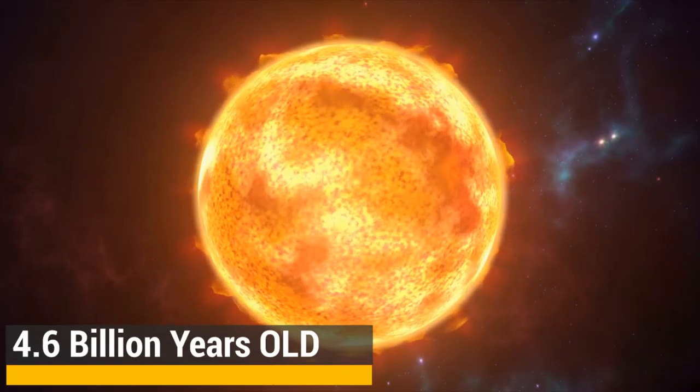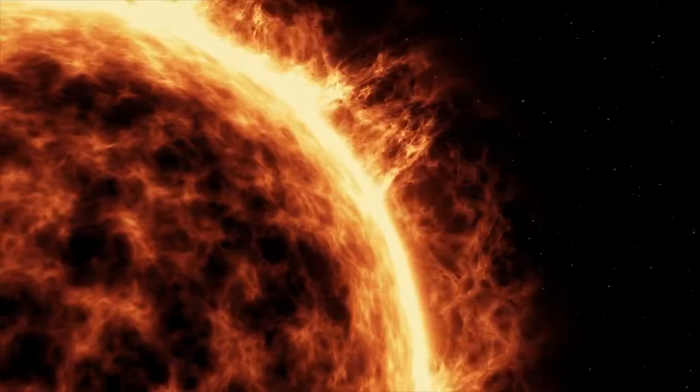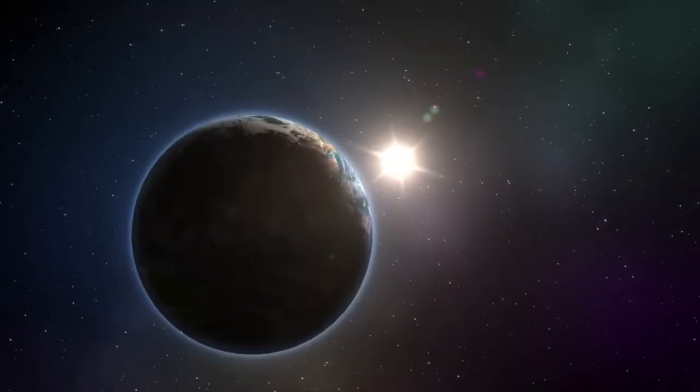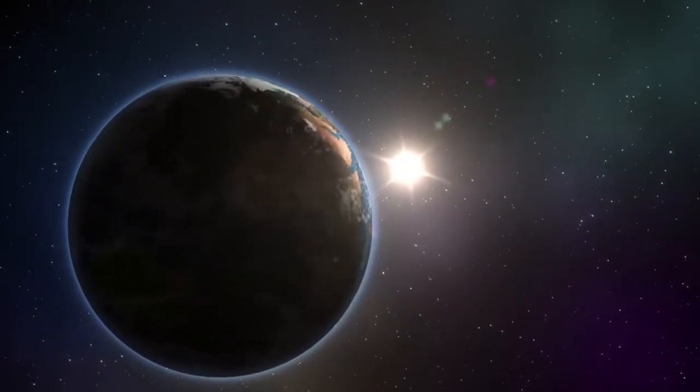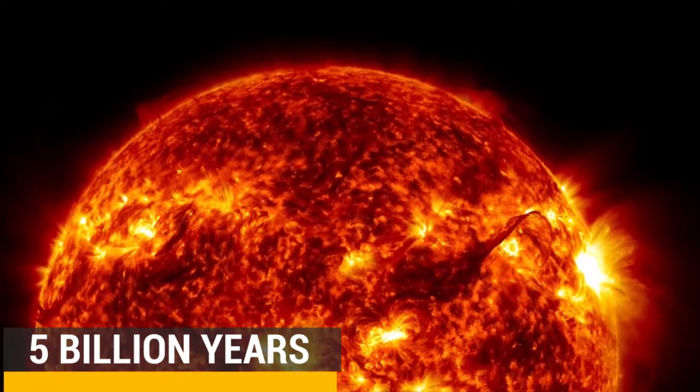The sun is around 4.6 billion years old. Astronomers believe it will die in about 10 billion years, based on what they have seen about some other stars. There will be additional events along the situation, obviously.